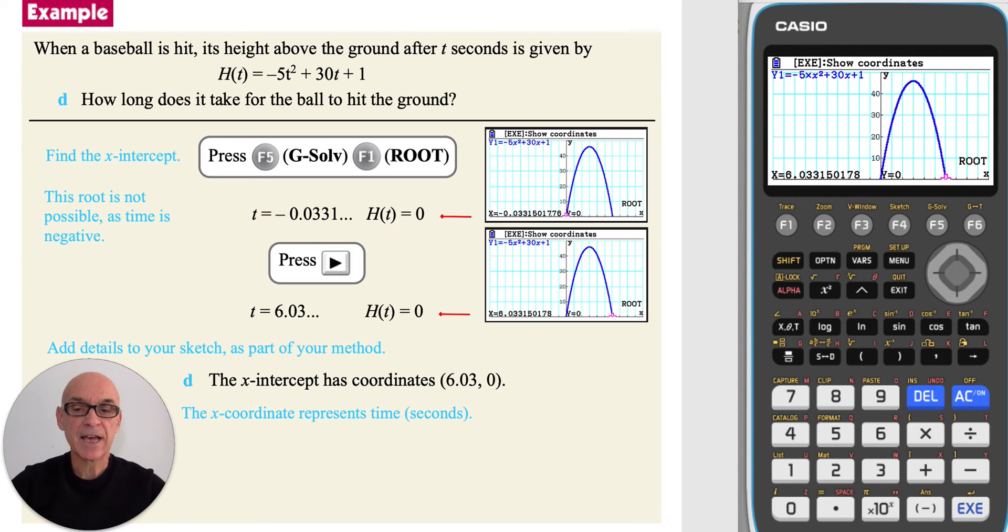Again, the x-coordinate represents the time. So it takes the ball 6.03 seconds to hit the ground.